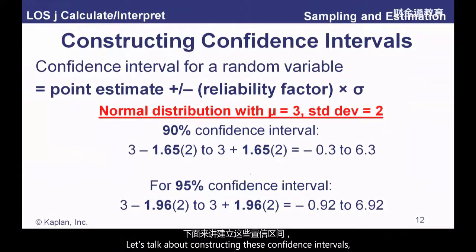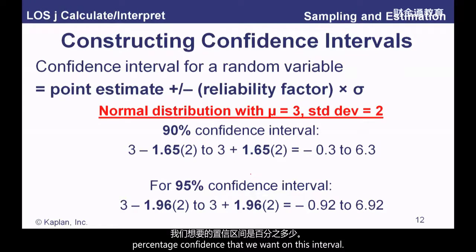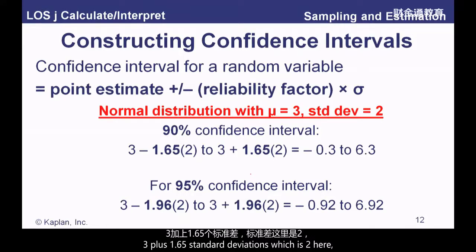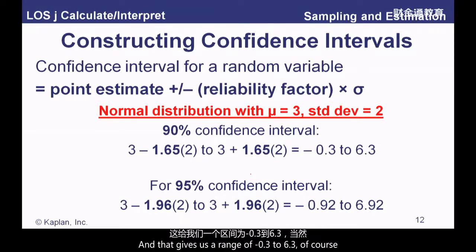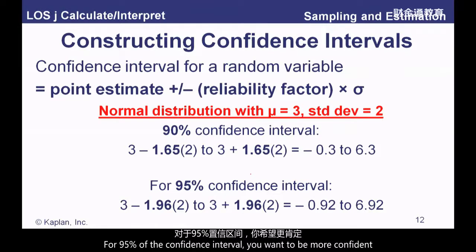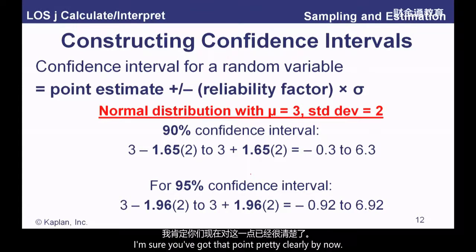Constructing confidence intervals: we have a point estimate plus or minus a reliability factor. That reliability factor is 1.65 or 1.96 depending on the percentage confidence we want. For a normal distribution with mean 3 and standard deviation 2, a 90% confidence interval is 3 plus or minus 1.65 times 2, giving a range from 0.3 to 6.3. For a 95% confidence interval, we use 1.96 standard deviations rather than 1.65 to make it a little wider — that's all there is to it.